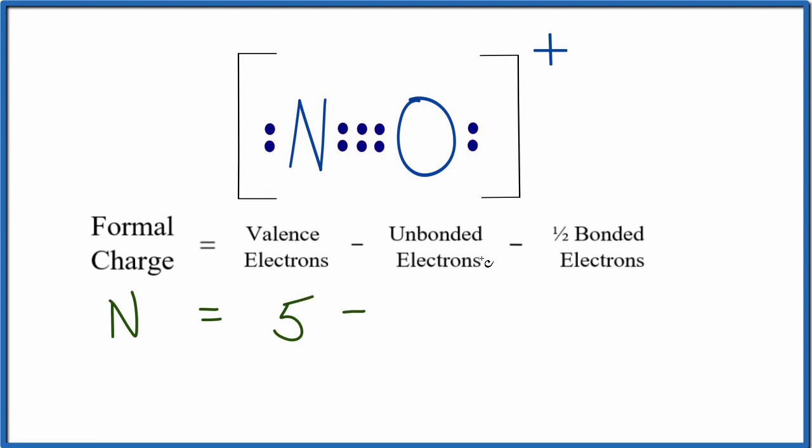And then unbonded electrons, electrons that aren't between atoms, aren't involved in a chemical bond. We have two right here, and we'll subtract one-half of the bonded valence electrons, and we have all of these between atoms. Those are the chemical bond, two, four, six of those.